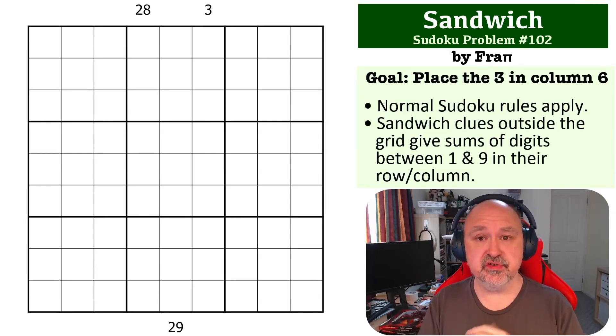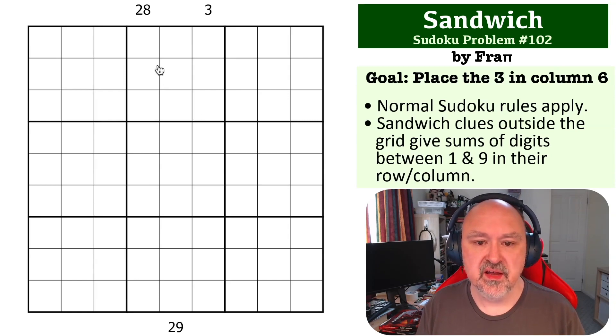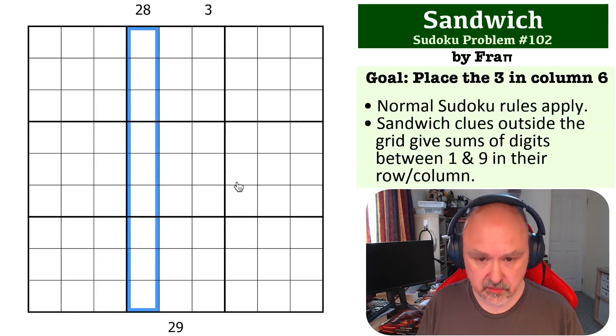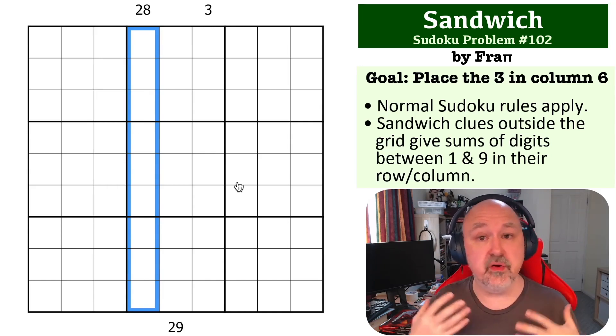Okay, so the important thing to realize about this one is the pressure that is put on sandwich clues by the fact that the one and the nine are the crusts and cannot be used in sandwich clues. So if we start by looking at this 28 clue, how can you make 28? You cannot use the one or the nine at all.